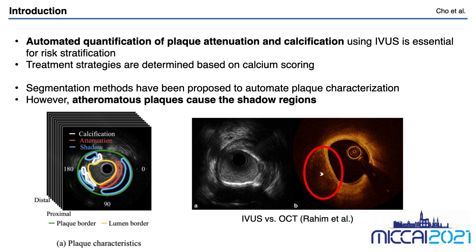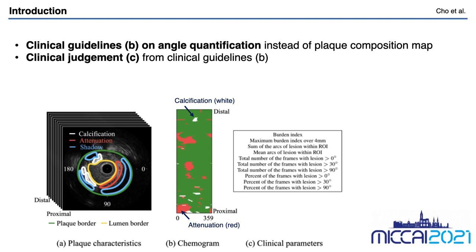To address this problem, cardiologists have developed clinical guidelines based on angle quantification instead of reconstructing plaque composition maps. For example, a maximal arc of attenuation of 30 degrees on IVUS indicates the presence of fibrous atheroma. Calcium scoring can also be based on angle quantification instead of the exact proportion of a calcified plaque.